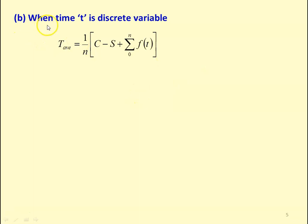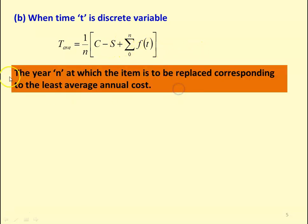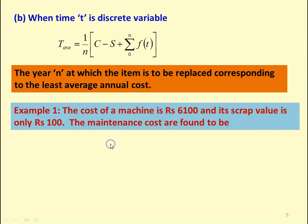The second model: when time t is a discrete variable, T-average = (1/n) × [C − S + Σ f(t)] from 0 to n. Here, the year n at which the item is to be replaced corresponds to the least average annual cost.